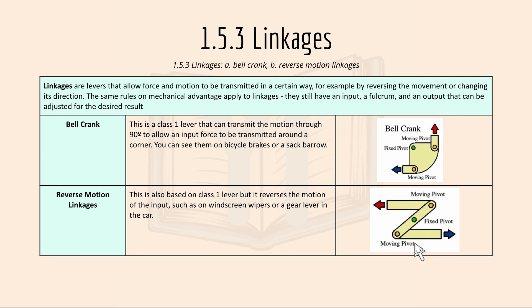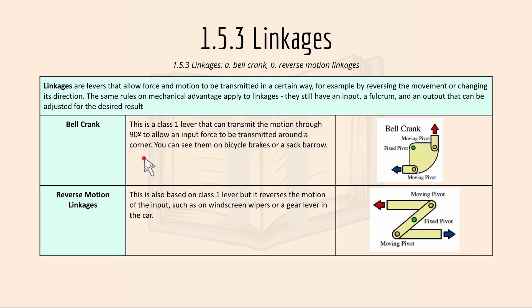1.5.3 is linkages — including bell crank and reverse motion linkages. Linkages are levers that allow force and motion to be transmitted in a certain way, for example by reversing the movement or changing its direction. The same rules of mechanical advantage apply; they still have an input, a fulcrum, and an output. A bell crank is a class 1 lever that transmits motion through 90 degrees to allow an input force to be transmitted around a corner, seen on bicycle brakes or a sack trolley. A reverse motion linkage is also based on a class 1 lever but reverses the motion of the input, such as on windscreen wipers or a gear lever in a car.